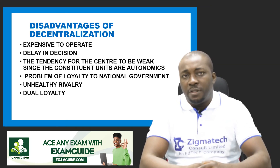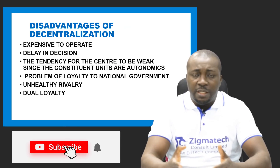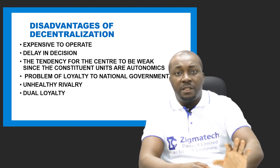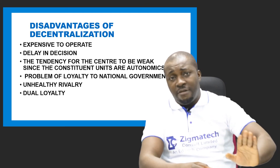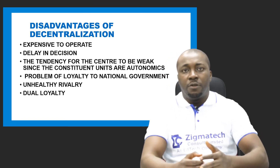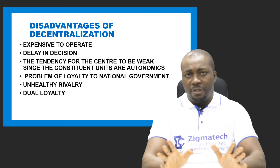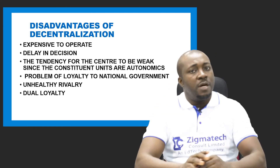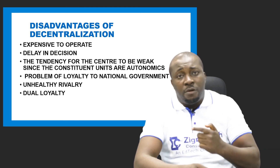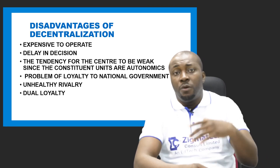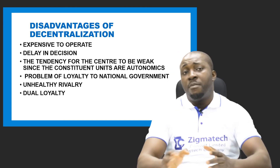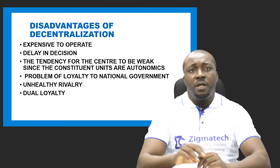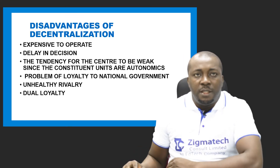Also, there is a tendency for the center to become weak since the constituent units are autonomous. The state governments have areas where the central government has no power to delve into. There is also the problem of double loyalty — citizens are loyal to both the central government and the component units, so the central government faces weak loyalty from citizens. Finally, there is unhealthy rivalry among the component units. Those are the major disadvantages of the decentralized system.